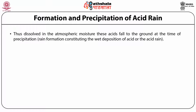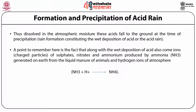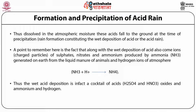Dissolved in atmospheric moisture, these acids fall to the ground at the time of precipitation. Along with the wet deposition of acid also come ions — charged particles of sulfates, nitrates and ammonium produced by ammonia generated on earth from liquid manure of animals. Ammonia reacts with protons and forms ammonium. Thus the wet acid deposited is in fact a mixture of sulfuric acid, nitric acid, oxides, ammonium and hydrogen.